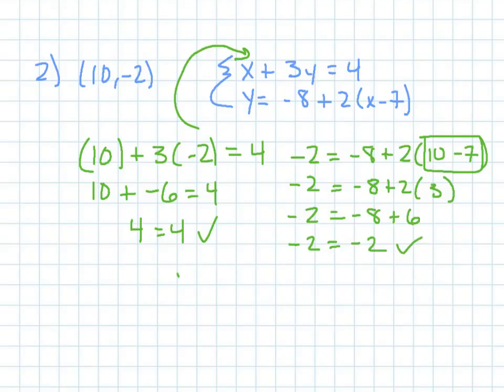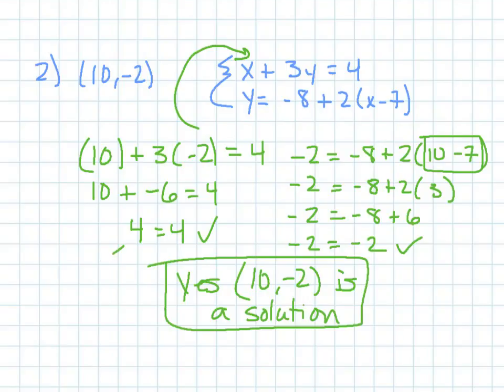So, they're both, so it is a solution. Yes. 10, negative 2 is a solution. Now, even though this equation got 4 equals 4 and this equation got negative 2 equals negative 2, it does not matter what those numbers are. It just matters that both sides of each equation are equal and the other equation, both sides of the equation are equal once I plug in that point. So, it doesn't matter what numbers I get. It just matters that they're equal to one another.